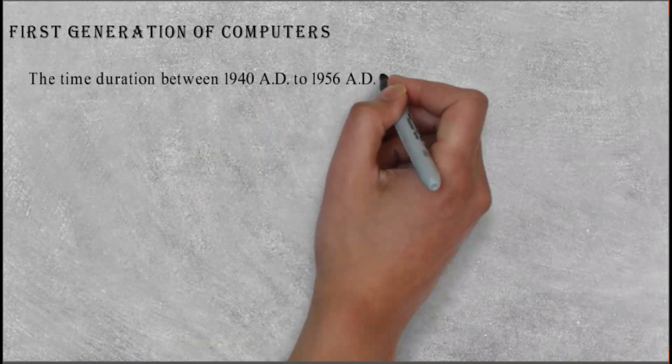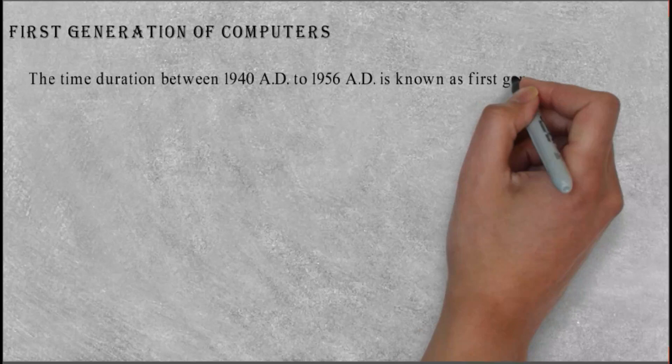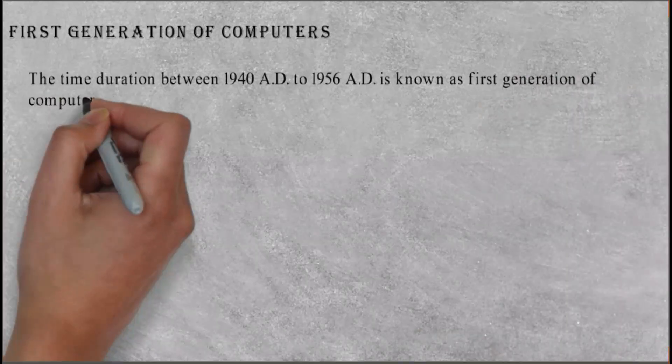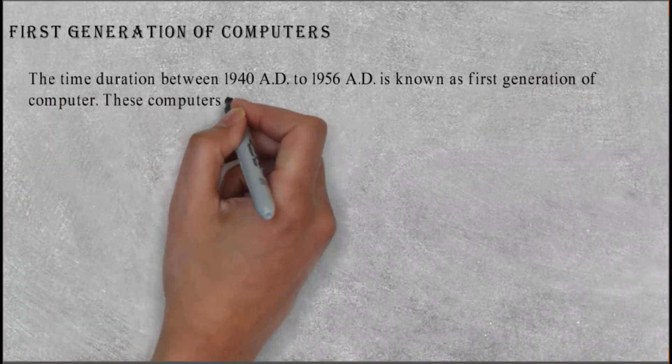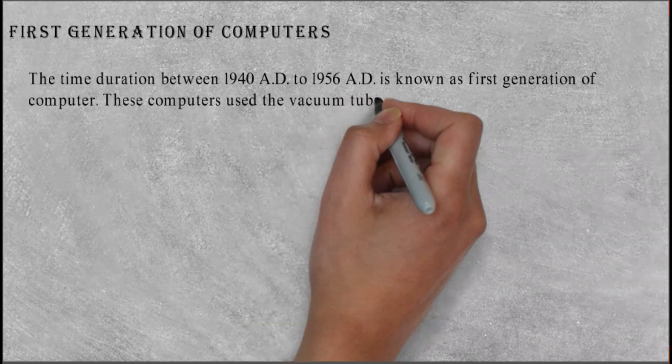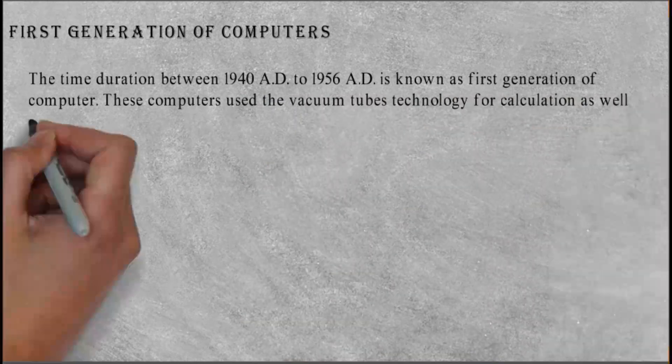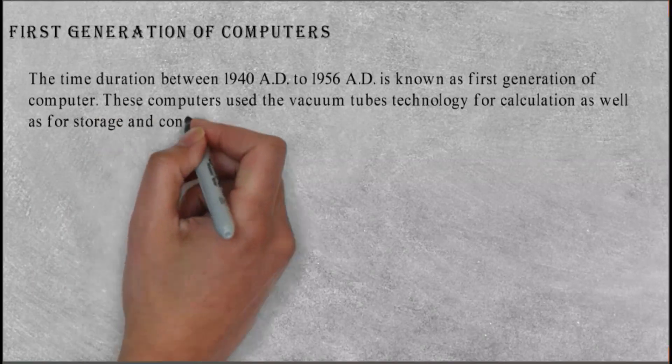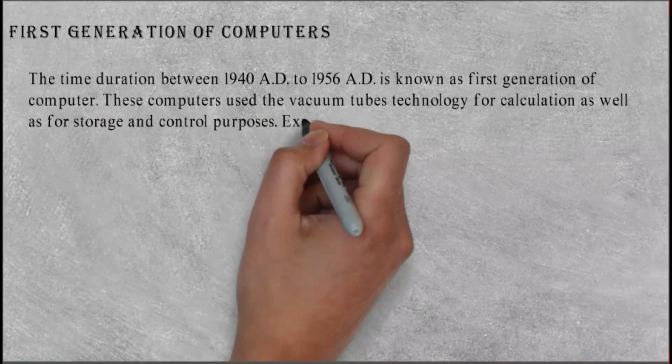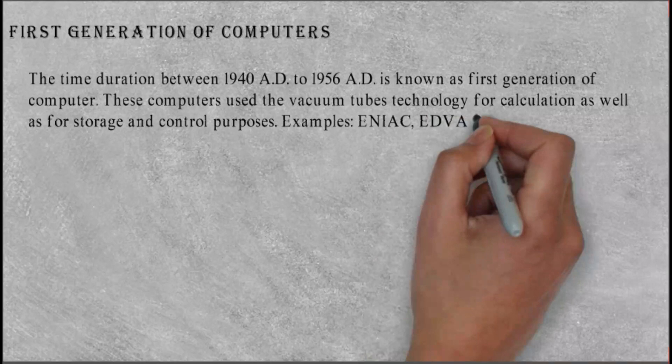First Generation of Computers: The time duration between 1940 AD to 1956 AD is known as First Generation of Computer. These computers used the vacuum tube's technology for calculation as well as for storage and control purposes. Examples: ENIAC, EDVAC, EDSAC, UNIVAC, etc.